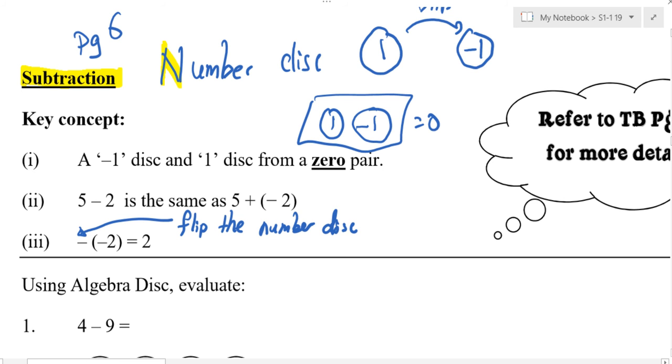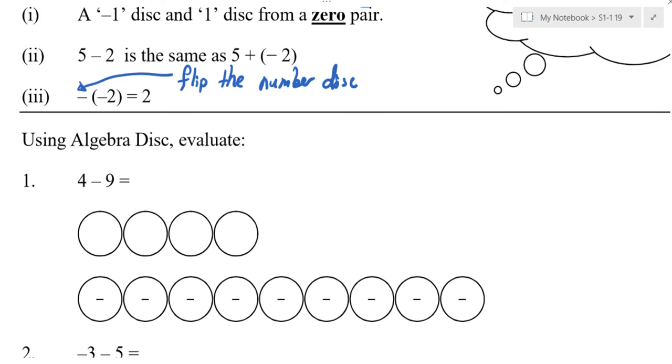I will flip the number disc. So if it's negative 2, what does it become? I have a negative 1. If I flip the disc, it becomes 1. So if I have negative negative 1, I flip twice, it becomes 2. Okay? Now let's go through the first example.